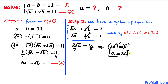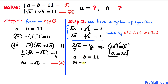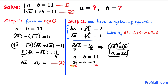Now let's plug a equals 36 into equation one to find b. Replacing a with 36, the equation becomes 36 minus b equals 11. Subtracting 36 from both sides gives negative b equals negative 25, so removing the negative signs our value of b is 25.